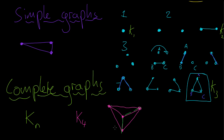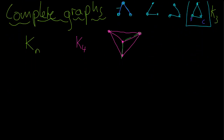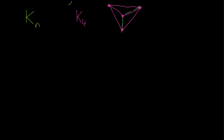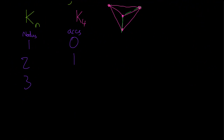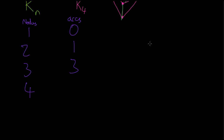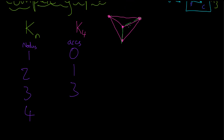When talking about these complete graphs, there's another cool property: the number of arcs between the nodes. Let's tally up. If we have one node, we have zero arcs. Two nodes: one arc. Three nodes: three arcs. Four nodes: one, two, three, four, five — we had six arcs. So is there a way we can tell the number of arcs from the number of nodes for a complete graph?